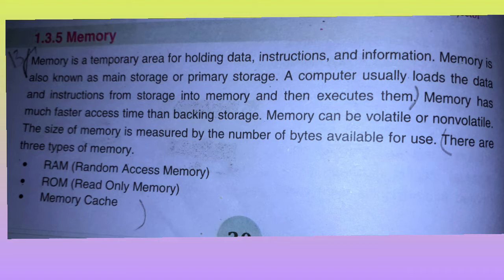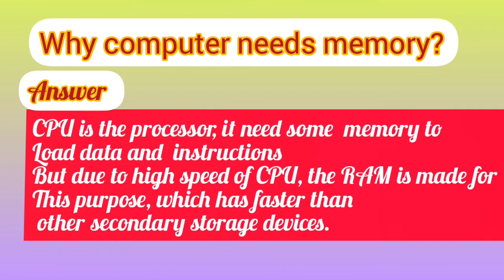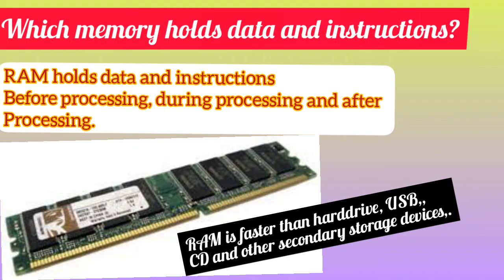That's why main memory RAM is needed during program execution — data and instructions must be in RAM for processing. The CPU is the main and most important component of a computer system, and it is the fastest component, which is why it needs faster memory, and that is RAM. RAM holds instructions and other data before, during, and after processing.